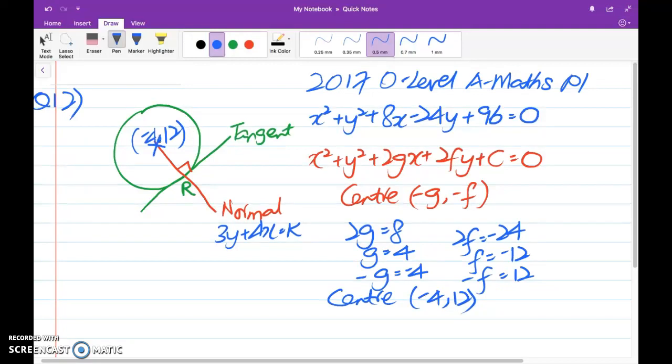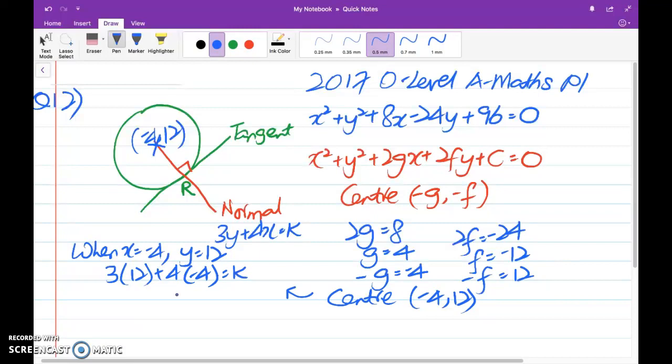Now remember what I told you, in order to find k, we need one point on the normal. And bingo! That point is none other than center of the circle. So with that, what I can do, let me carry on my working here. When x is equals to negative 4, y is equals to 12, I substitute into equation of normal. And I conclude that my value of k is 20. And that's how you find the value of k of 5 marks question.